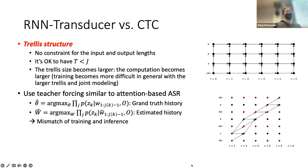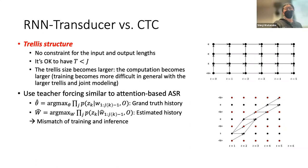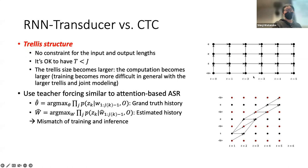RNN Transducer is flexible — there are no constraints on the length of input and output — while for CTC, length constraints are important, so be careful to make CTC work under normal conditions. Due to its large structure, RNN Transducer tends to be more difficult to train than CTC. RNN Transducer and attention also share a teacher forcing issue compared with CTC.